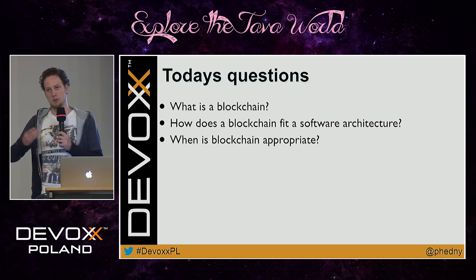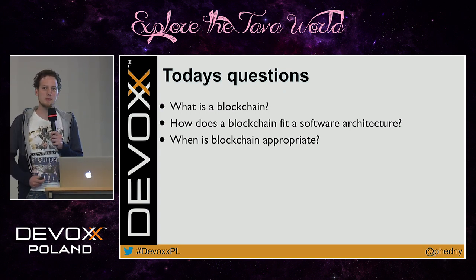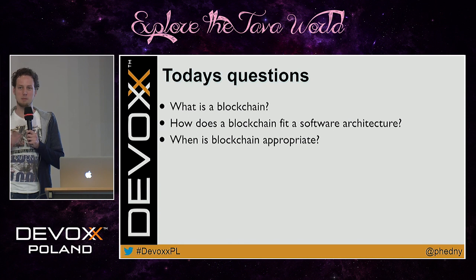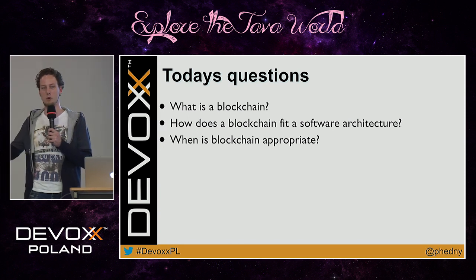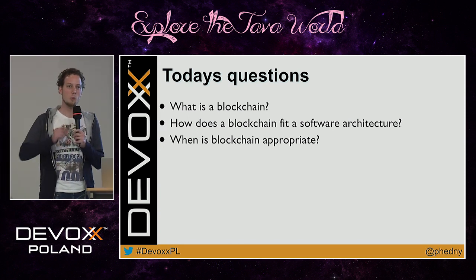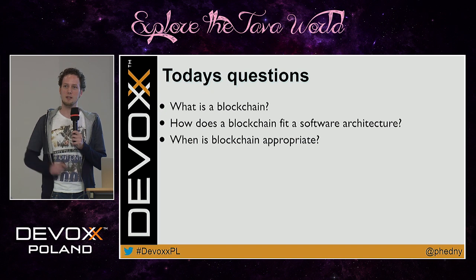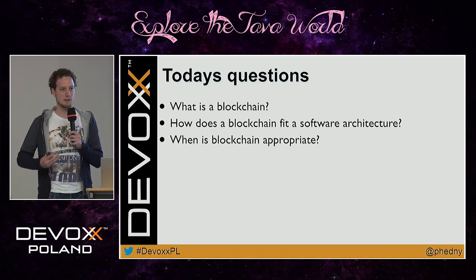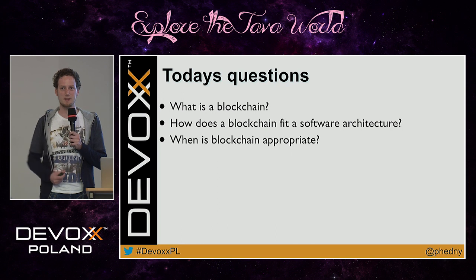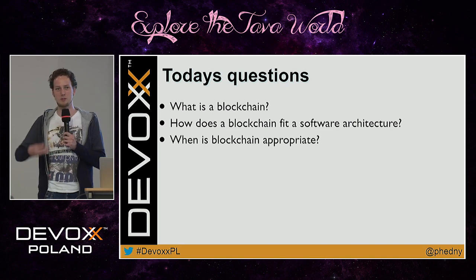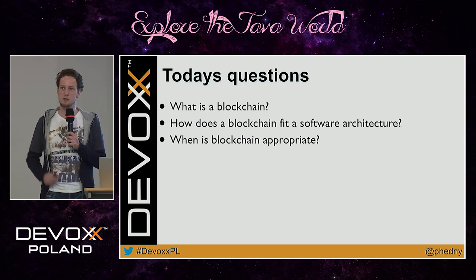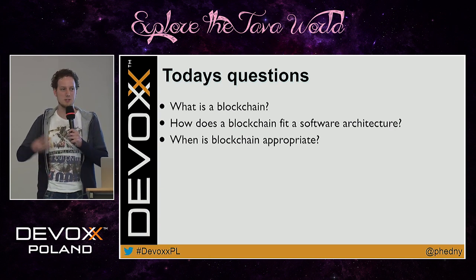One of the interesting things about blockchains — taking Bitcoin as an example — is that we want to transfer money from one person to another without relying on a central party like a bank. In our current system we need a bank; we trust that they run the software correctly. But if you want to remove that level of trust you need a different system: a peer-to-peer system.